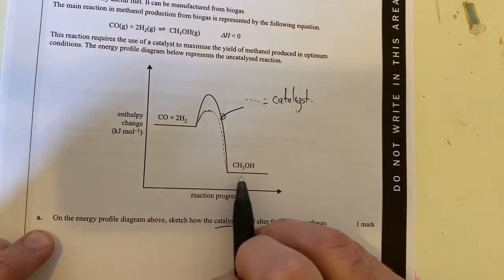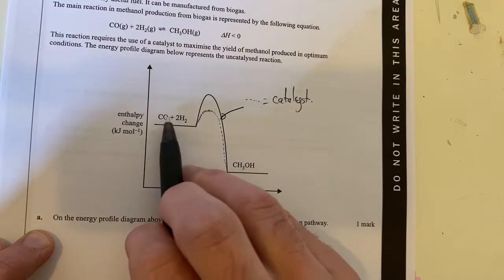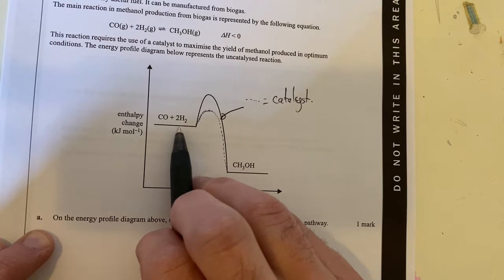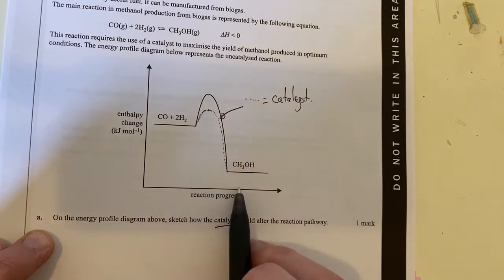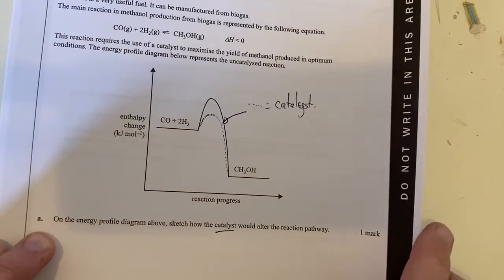Our products stay the same down here. They are still the same there. Our reactants stay the same. It's just the fact that the catalyst lowers that activation energy and there is our answer to part A.